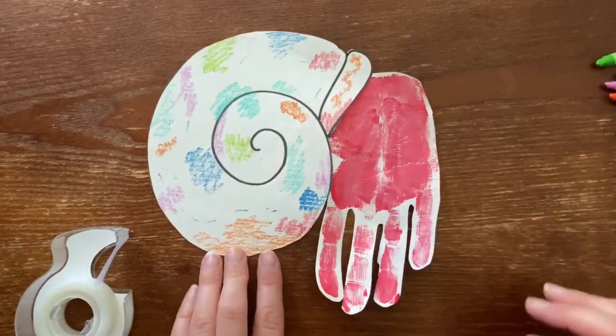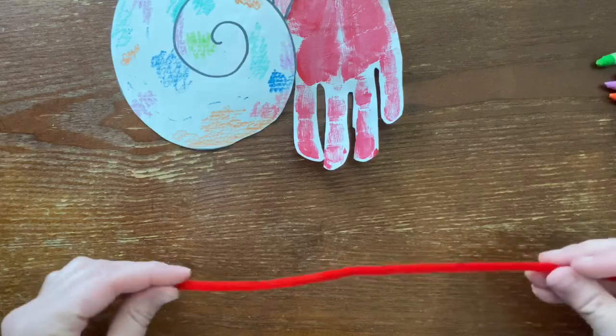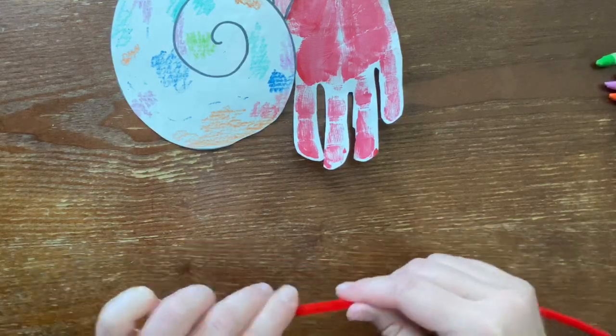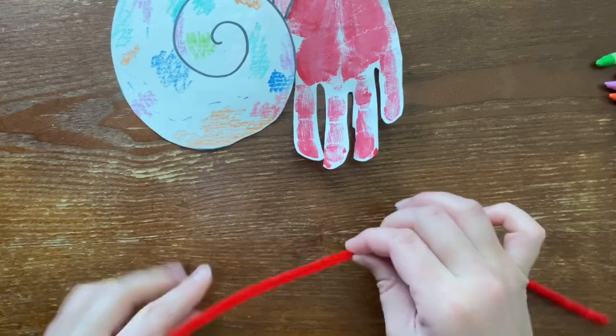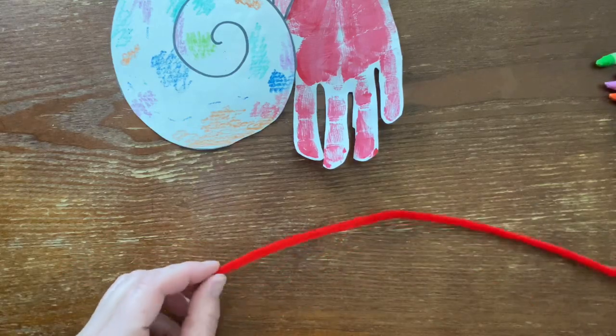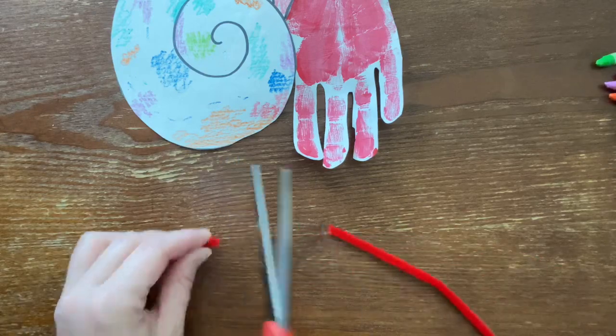When that is all done, now's the time that you can go ahead and get out your pipe cleaner and you're going to cut out two little pieces for his eyes. So I'd say about an inch and a half, almost two inches.